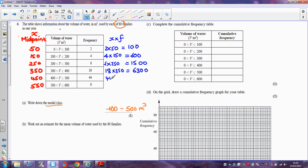We've got 44 multiplied by 450, and that comes out as 19,800. And then 6 multiplied by 550, which is 3,300. So the total amount of water then used by all of those families, if we add that lot together, comes out as 31,600 cubic metres.